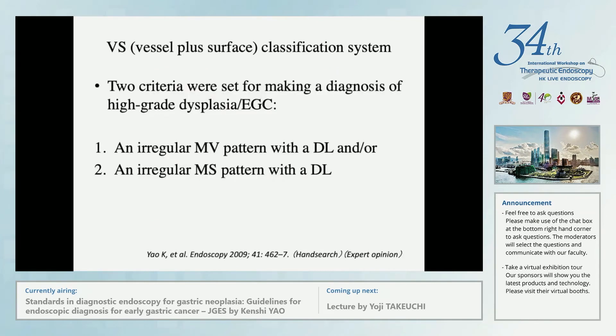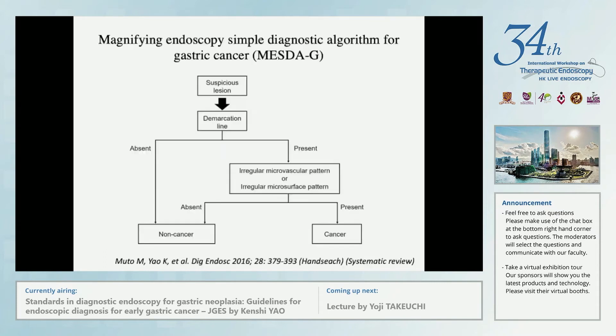Two criteria were set for making a diagnosis of high-grade dysplasia or early gastric cancer: one, an irregular microvascular pattern with a demarcation line, and/or two, an irregular microsurface pattern with a demarcation line. It is also very simple. Using this diagnostic system, we have proposed MESDA-G.